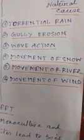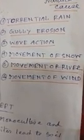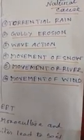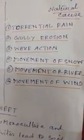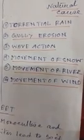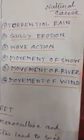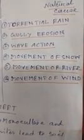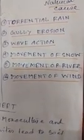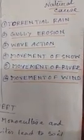Number four is movement of snow — the movement of snow causes soil erosion. Number five is the movement of rivers. The movement of a river causes soil erosion by carrying soil particles downstream.